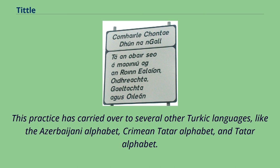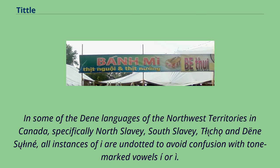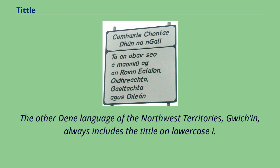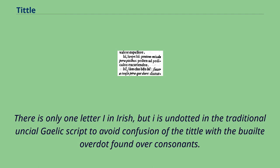This practice has carried over to several other Turkic languages like the Azerbaijani alphabet, Crimean Tatar alphabet, and Tatar alphabet. In some of the Dene languages of the Northwest Territories in Canada — specifically North Slavey, South Slavey, Tłı̨chǫ, and Dene Suline — all instances of i are undotted to avoid confusion with tone-marked vowels such as è or ì. The other Dene language of the Northwest Territories, Gwich'in, always includes the tittle on lowercase i. There is only one letter i in Irish, but i is undotted in the traditional unsealed Gaelic script to avoid confusion of the tittle with the buailte overdot found over consonants.